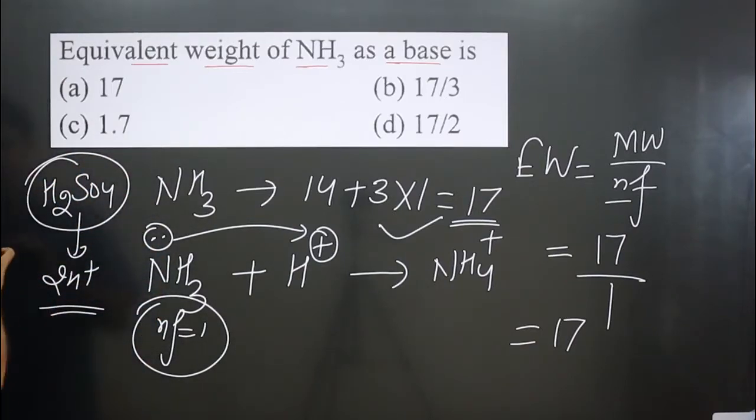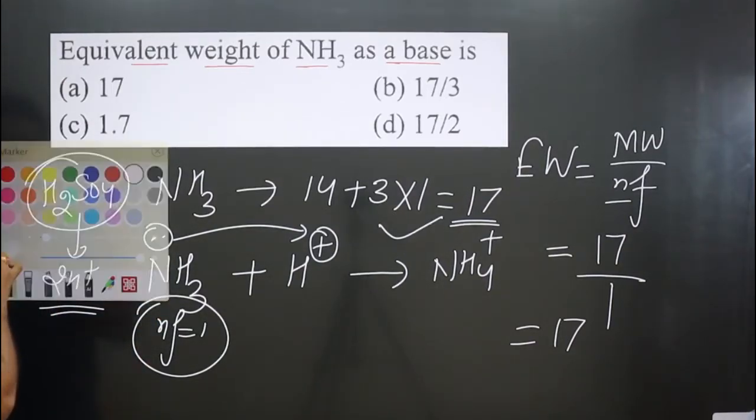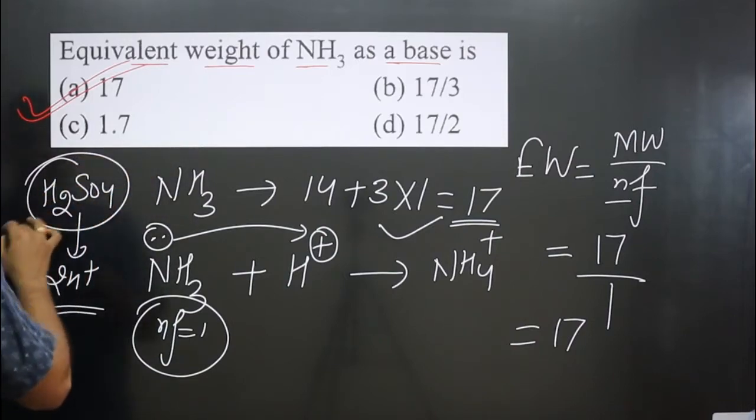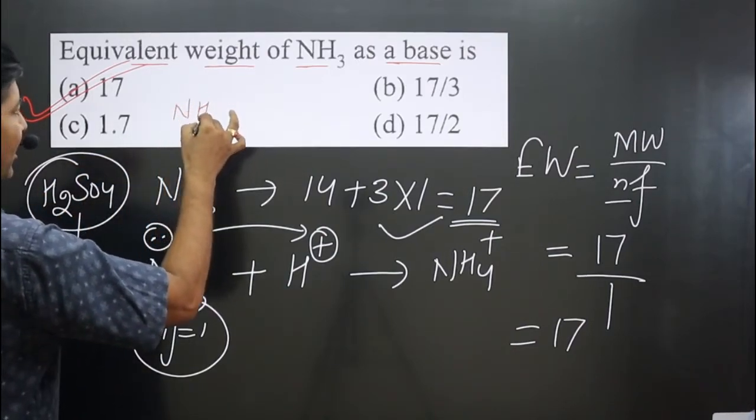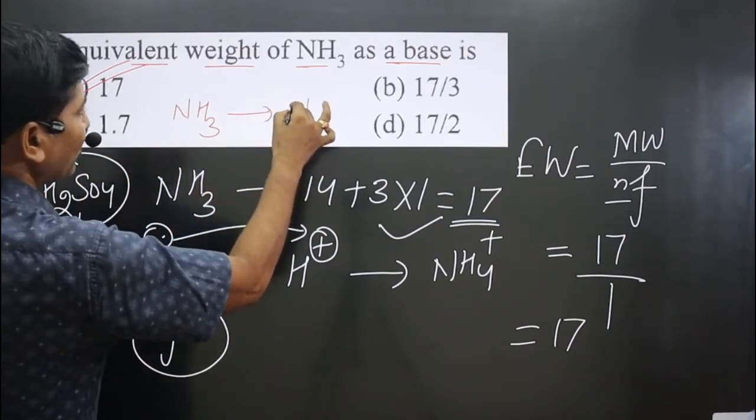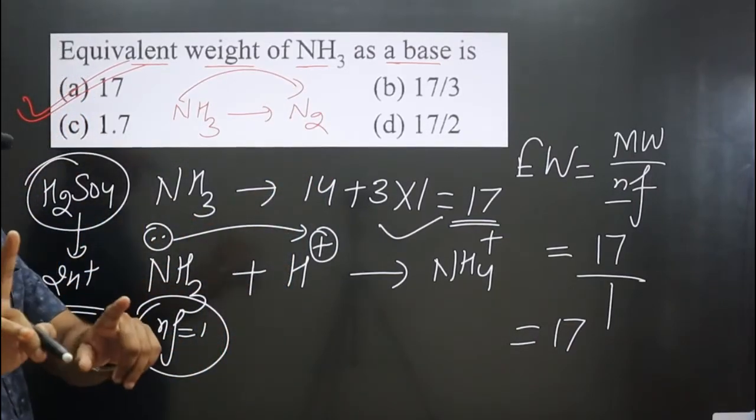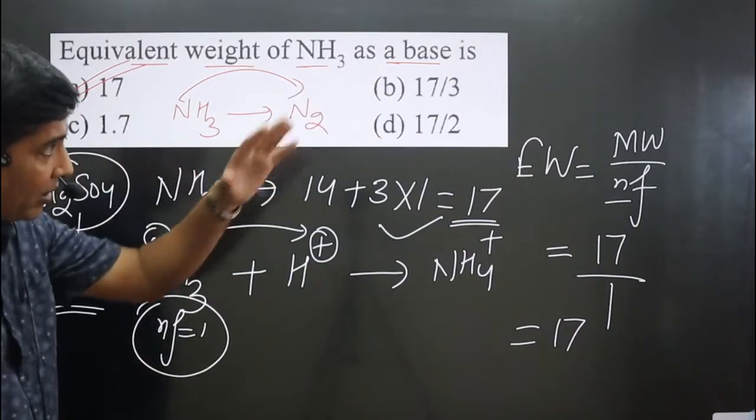Keep in mind, sometimes students make a mistake in this case. They take ammonia molecule and convert it into nitrogen gas. If you calculate the n factor value for that, it will be completely different and you'll end up with a wrong answer.